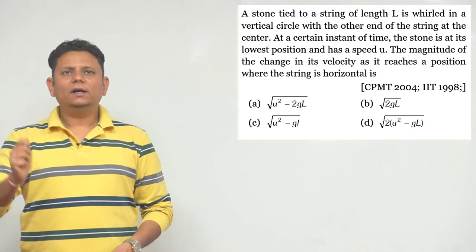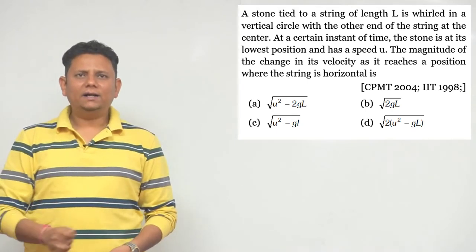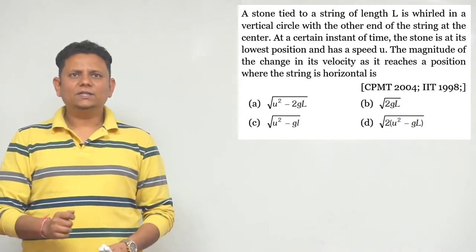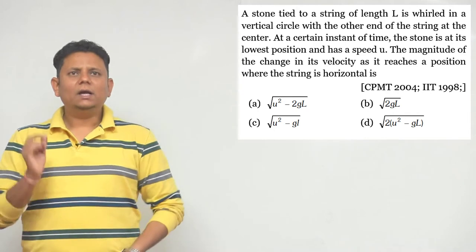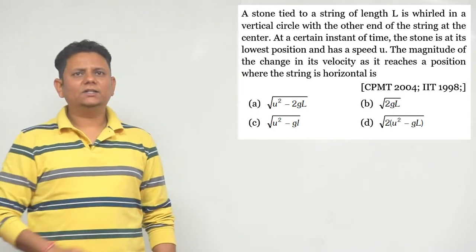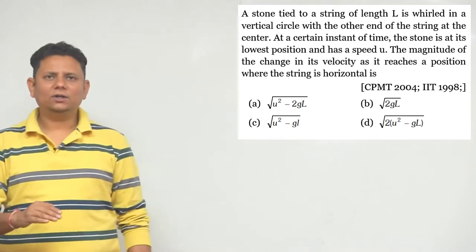Question is: a stone tied to a string of length L is rolled in a vertical circle with the other end of the string at the center. At a certain instance of time, the stone is at the lowest position and it has a speed of U. The magnitude of the change in velocity as it reaches the position when the string is in the horizontal location will be.